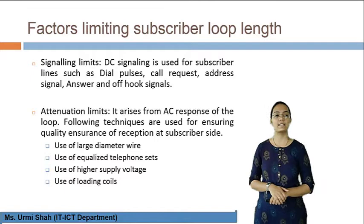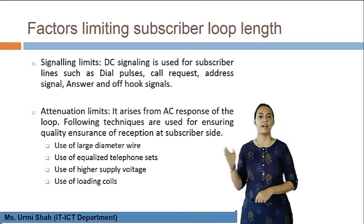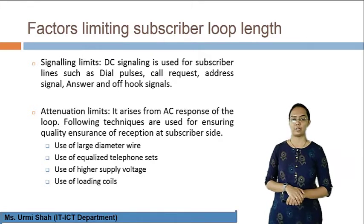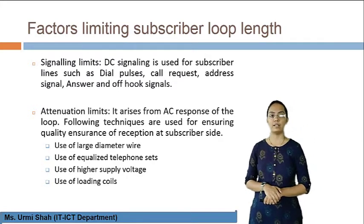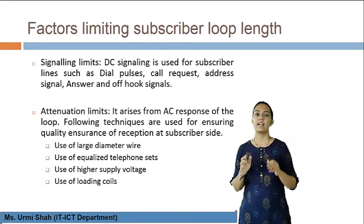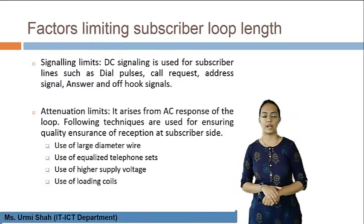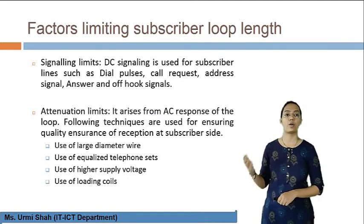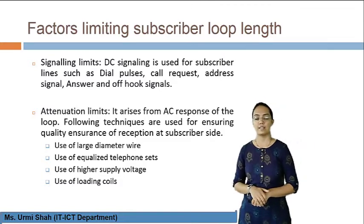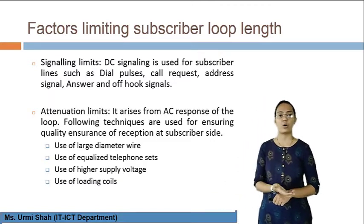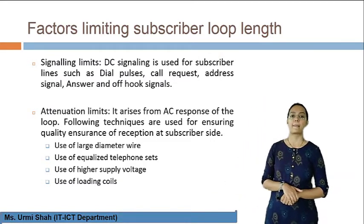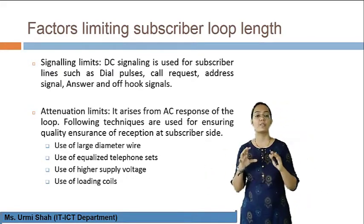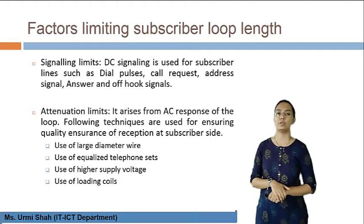The factors limiting subscriber loop length are signaling limit and attenuation limit. In the signaling limit, DC signaling is used for subscriber lines, such as dial pulses, call request, address signal, answer, and off-hook signals. The attenuation limit arises from the AC response of the loop.